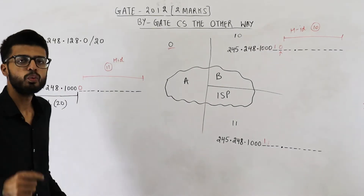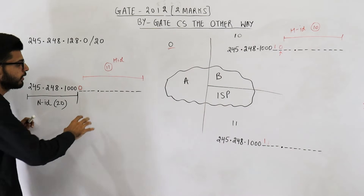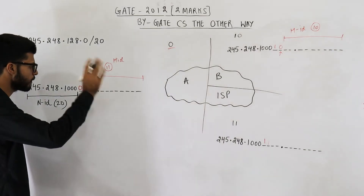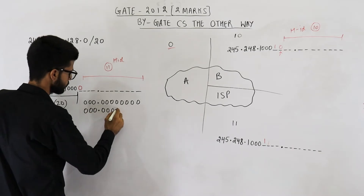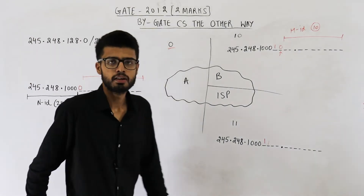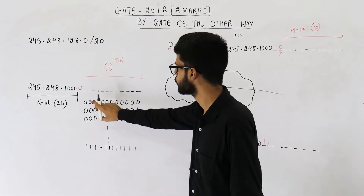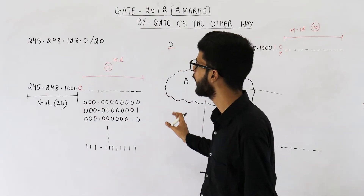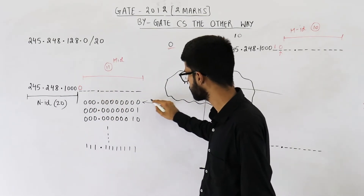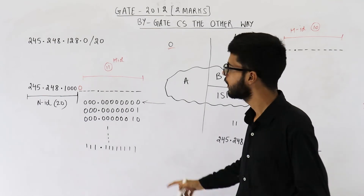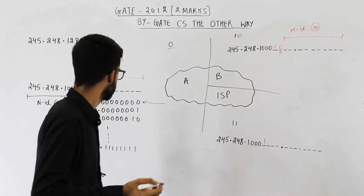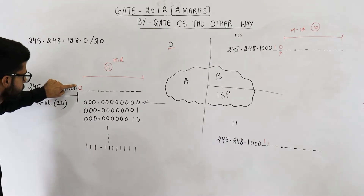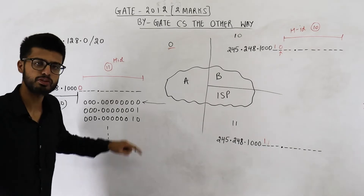To find the network addresses, we need the first IP in each block. All IP addresses are listed by changing the host ID bits. The first IP address is selected as the network address — that simply means all host ID bits are zero. So the first IP for the /20 block is 245.248.10000000.00000000, i.e., 245.248.128.0.